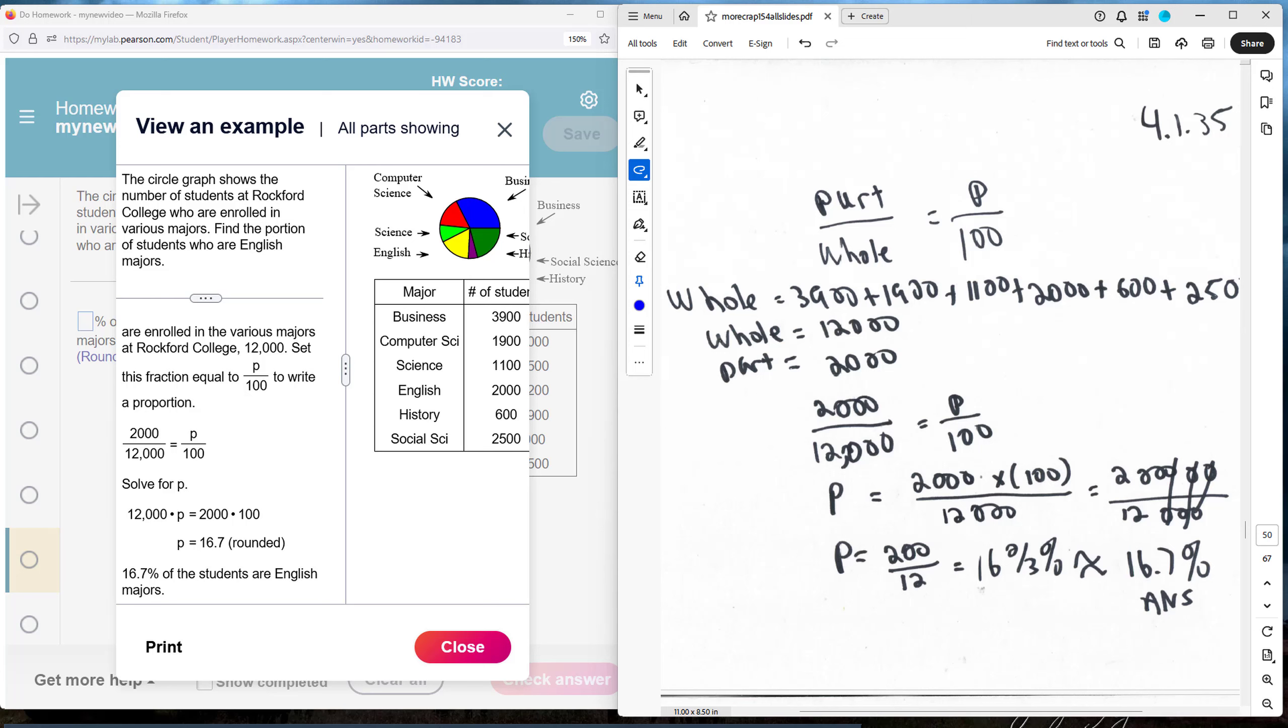Chapter 4, Section 1, Problem 35. The circle graph shows the number of students at Rockford College who are enrolled in various majors. Find the portion of students who are English majors.